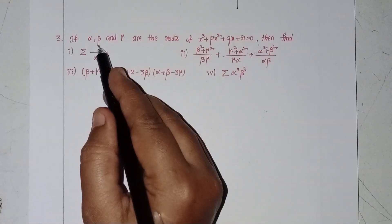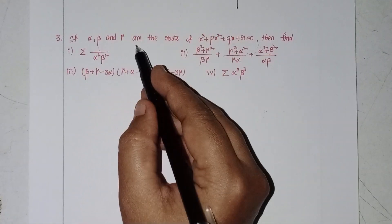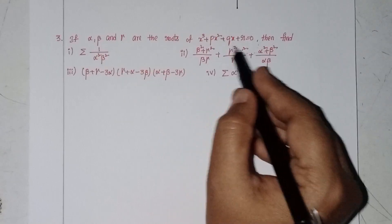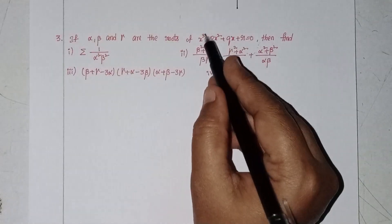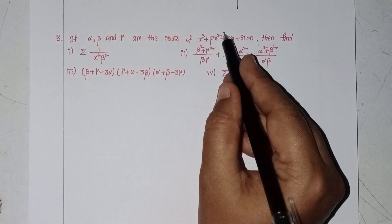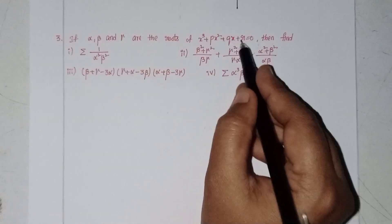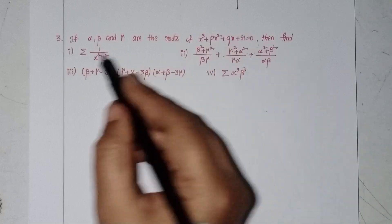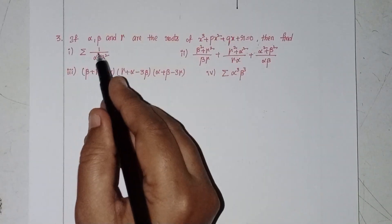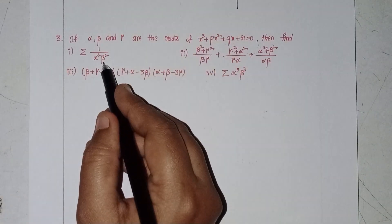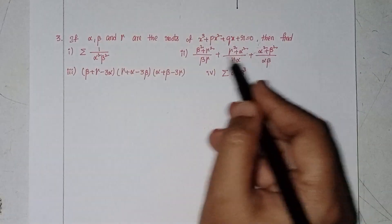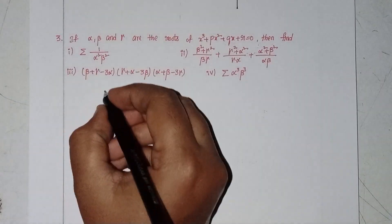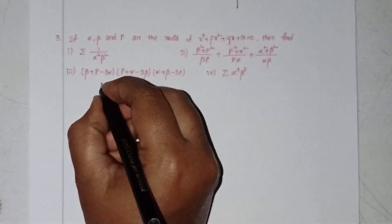If alpha, beta and gamma are the roots of the given equation x³ + px² + qx + r = 0, then find summation of 1/(α²β²).